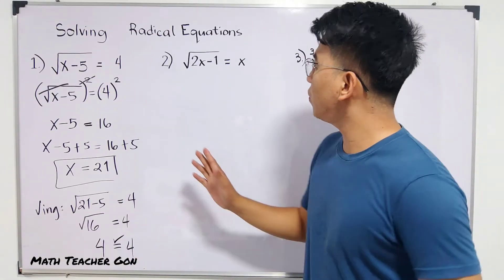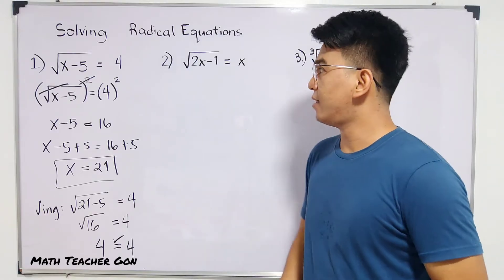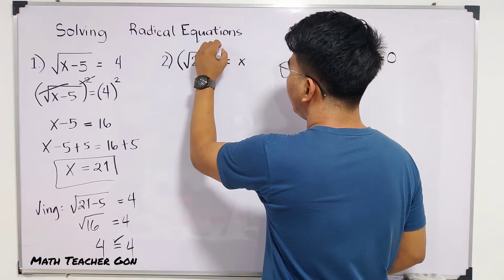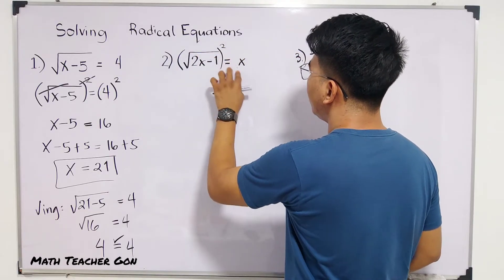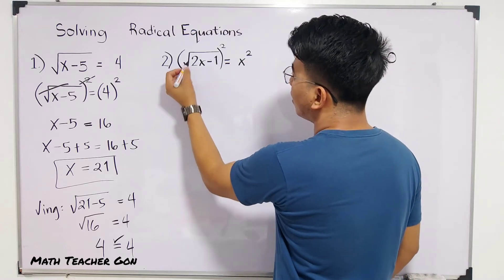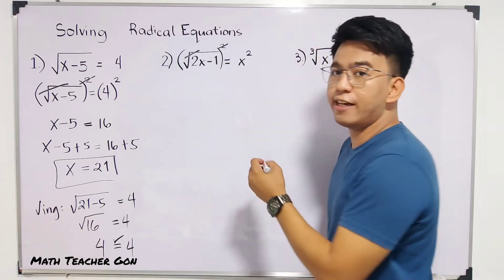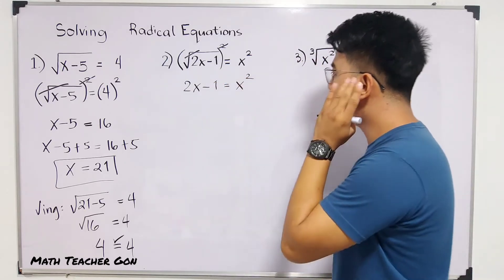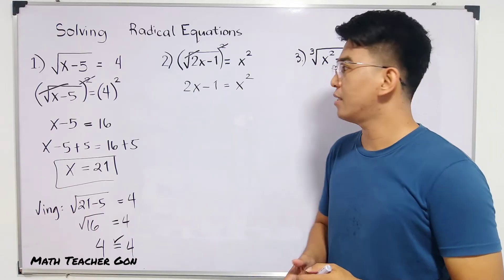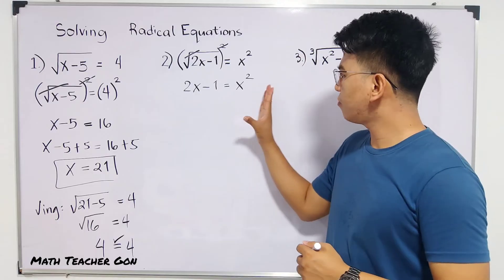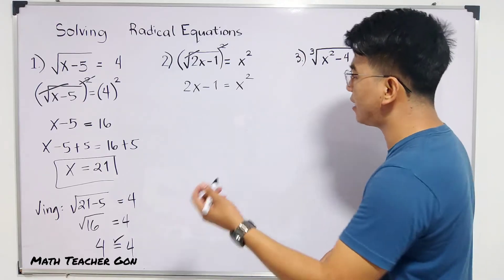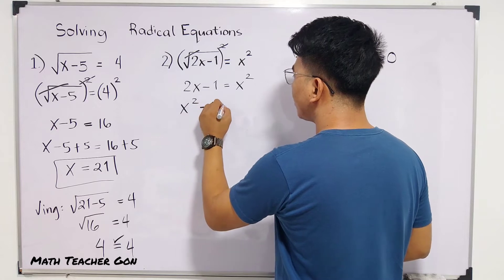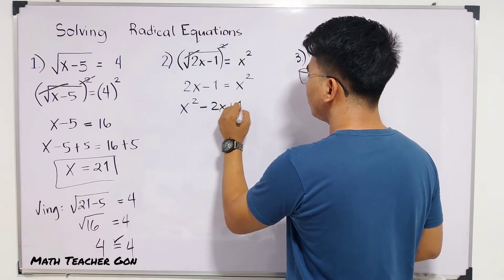Let's move on to item number 2. We have the square root of 2x minus 1 is equal to x. The first thing we need to do is to square both sides of the equation. Squaring both sides eliminates the radical sign and the exponent, giving us 2x minus 1 on the left. On the right side, x squared. As you can see, this is a quadratic equation. The next step is to write this equation in standard form: x squared minus 2x plus 1 is equal to 0.